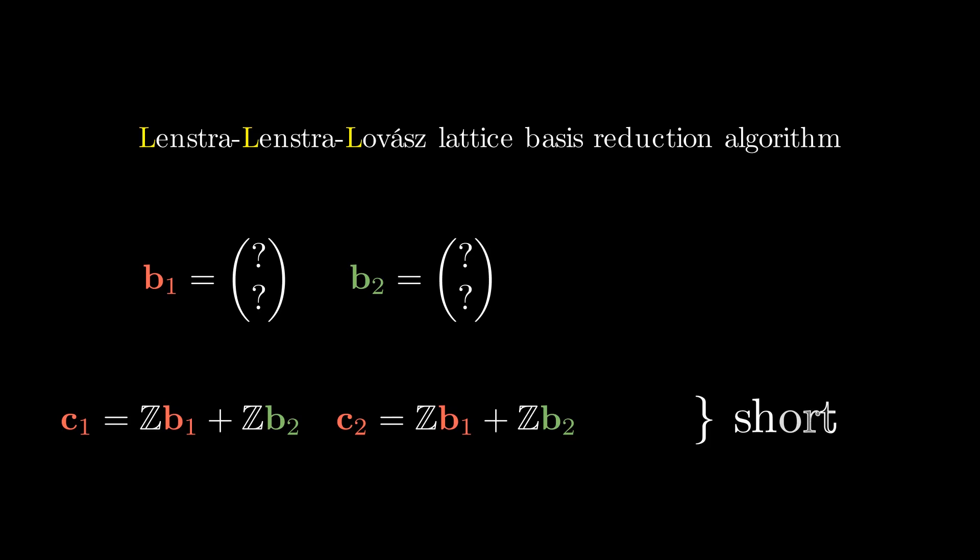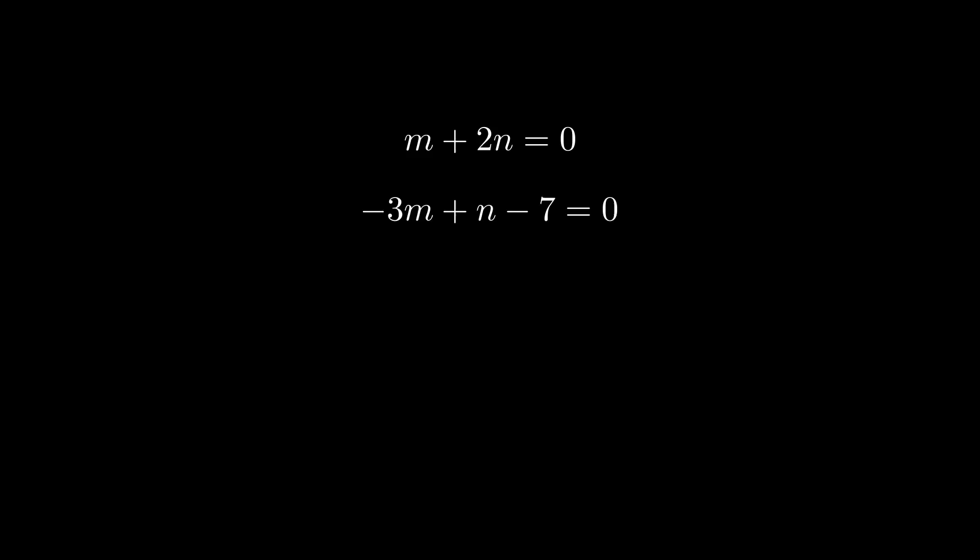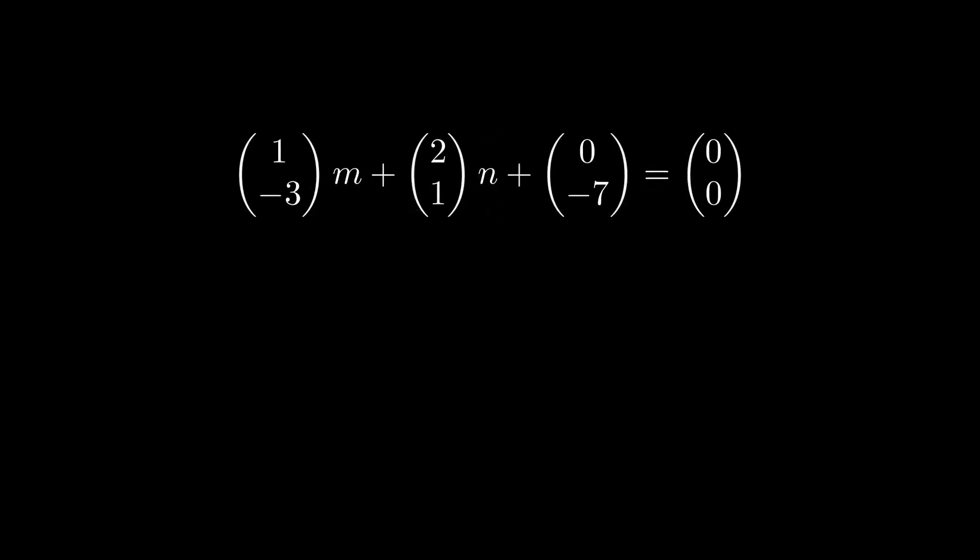You would use LLL when you have a bunch of vectors and need to find a short linear combination. Here's an example: suppose we have the system m + 2n = 0 and -3m + n - 7 = 0. You probably don't need LLL to solve this — there are easier ways since it's two variables, two linear equations — but I'll demonstrate how LLL can be applied. You convert it into vector form: m times (1, -3) plus n times (2, 1) plus (0, -7) equals (0, 0).